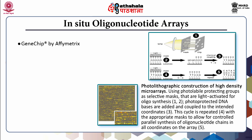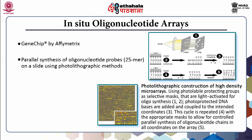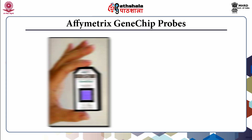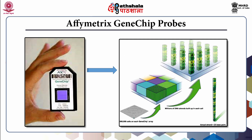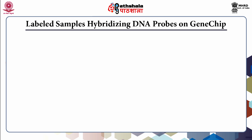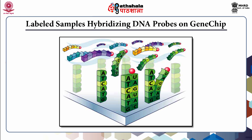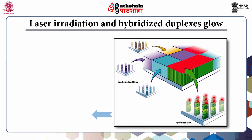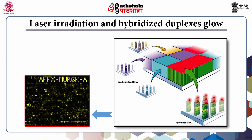In-situ oligonucleotide arrays involve parallel synthesis of oligonucleotide probes using photolithographic methods, introducing diversity by involving millions of probes on the microarray. Multiple probes per gene can be generated and usually these arrays are one-color arrays. The Affymetrix gene chip probes have magnified views where millions of DNA strands are bound per spot, and when the sample is applied it finds complementary sequences onto the labeled probes. Laser irradiation produces fluorescence signals from the labeled probes and hybridized sample.